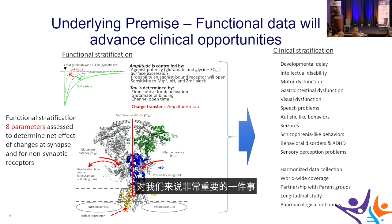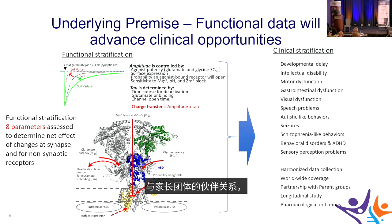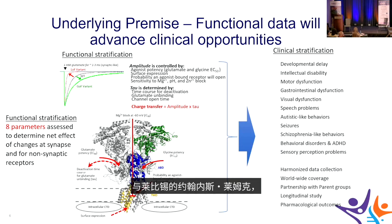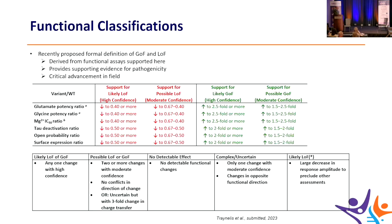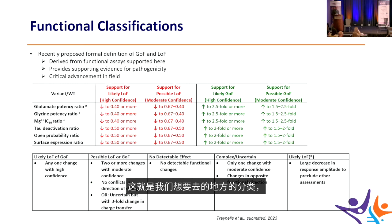Key to progress has been harmonized data collection worldwide, partnership with parent groups, and longitudinal study — a collaborative effort with Johannes Lemke in Leipzig, Jennifer at Columbia, and Simons.